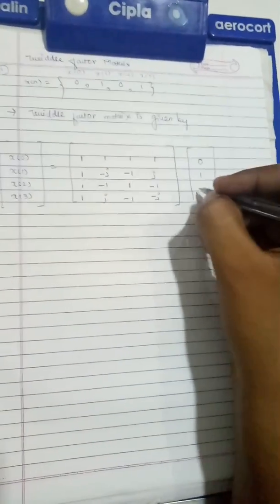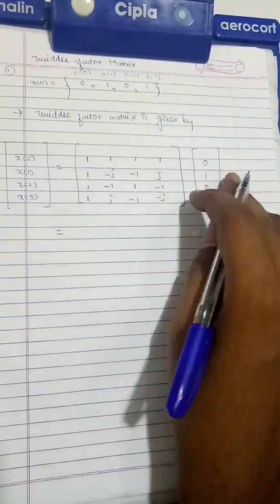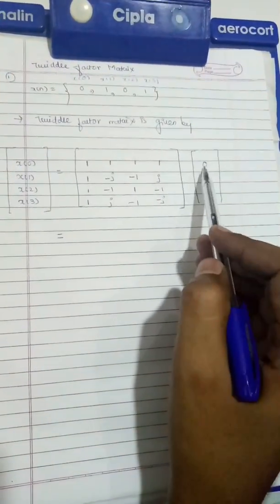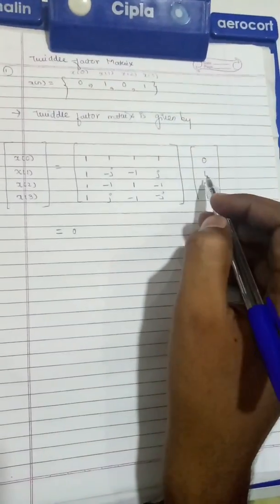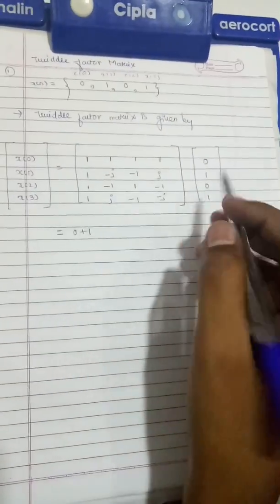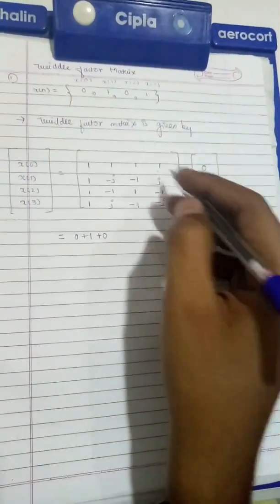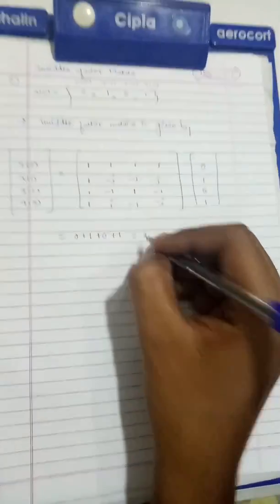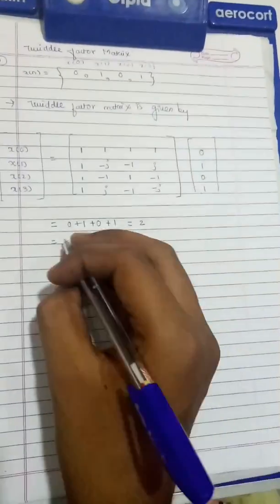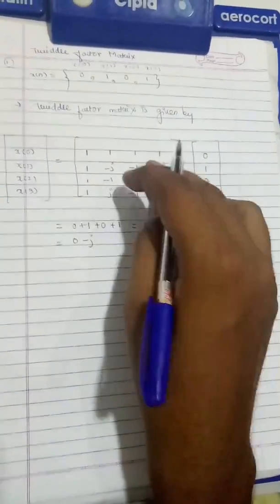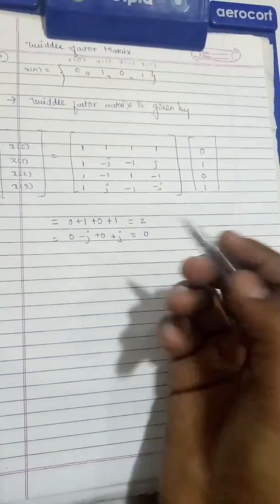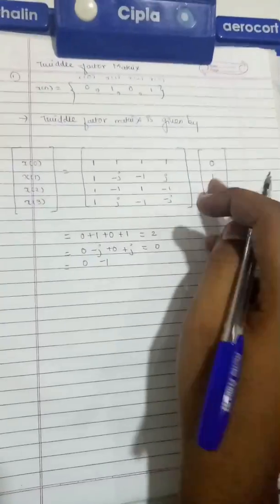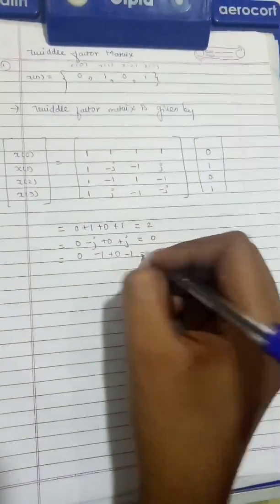We multiply the twiddle factor matrix by X of n, which is [0, 1, 0, 1]. The first element: 0×1 + 1×1 + 0×1 + 1×1 = 2. The second element: 0 + (-j) + 0 + j = 0, since -j and +j cancel. The third element: 0 + (-1) + 0 + (-1) = -2.